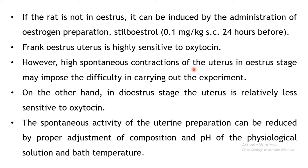Without adding oxytocin, the uterus can still contract spontaneously. This can be overcome by adjustments in the composition of the physiological salt solution, or the pH and bath temperature. All these experimental conditions can be adjusted to reduce the spontaneous contractions of the uterus. Also, you should ensure the rat is in the frank estrus stage, as the diestrus stage of the uterus is relatively less sensitive to oxytocin.